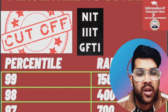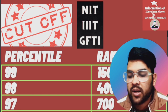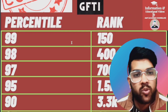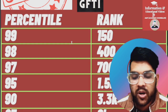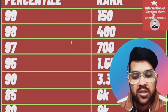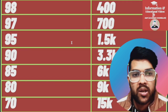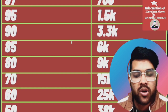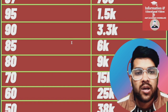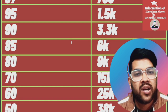For 99 percentile: rank 150 or less. For 98: under 400. For 97: under 700. For 95: under 1,500. For 90: under 3,300. For 85: under 6,000. For 80: under 9,000. For 70: under 15,000. For 60: under 25,000. For 50: under 38,000.